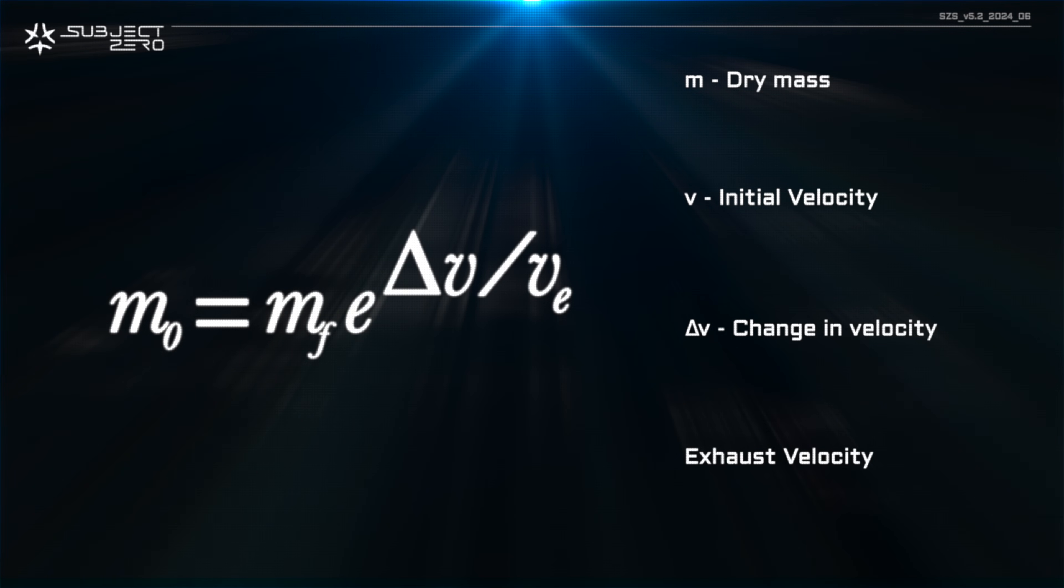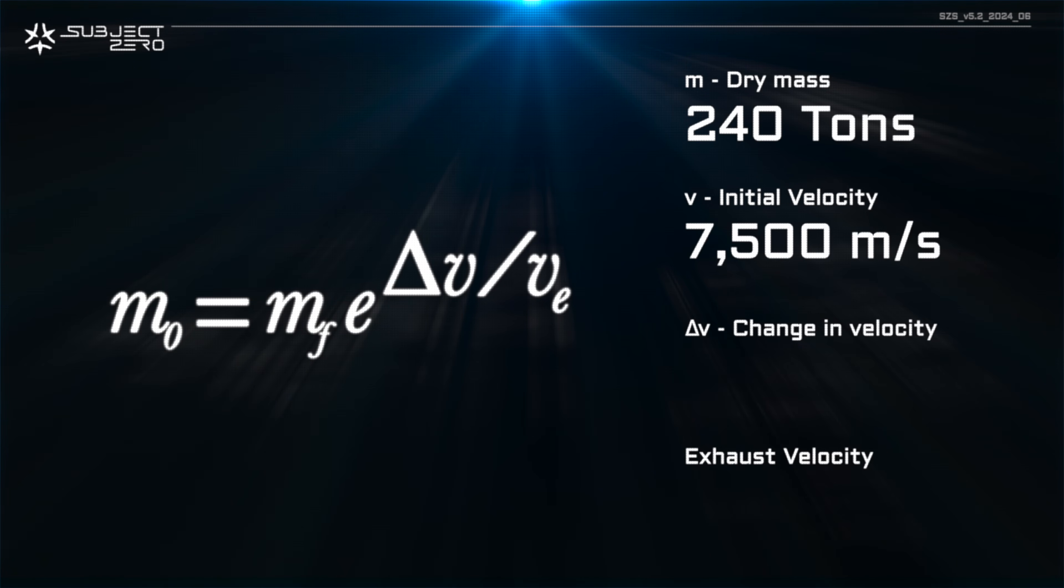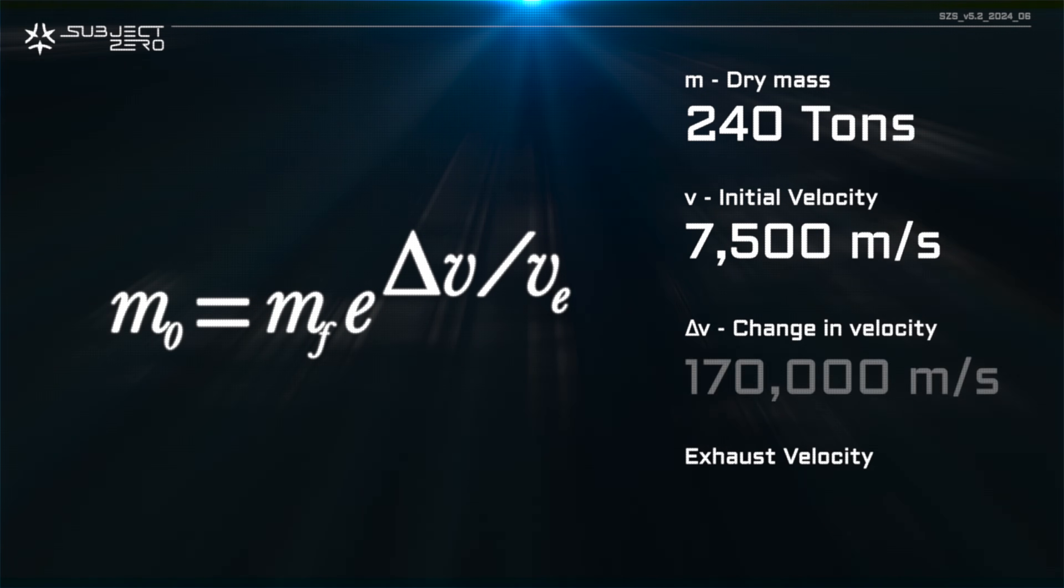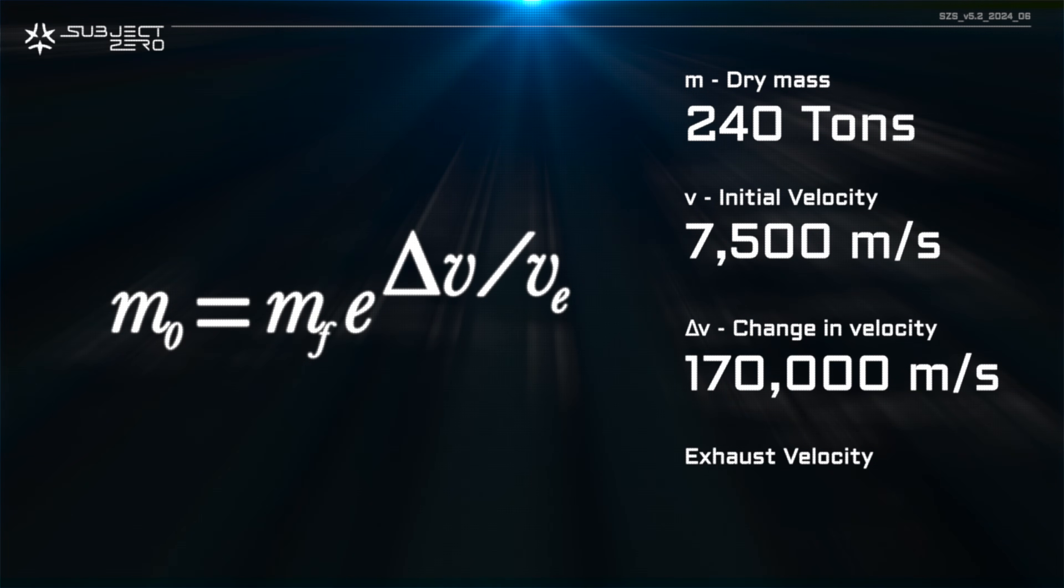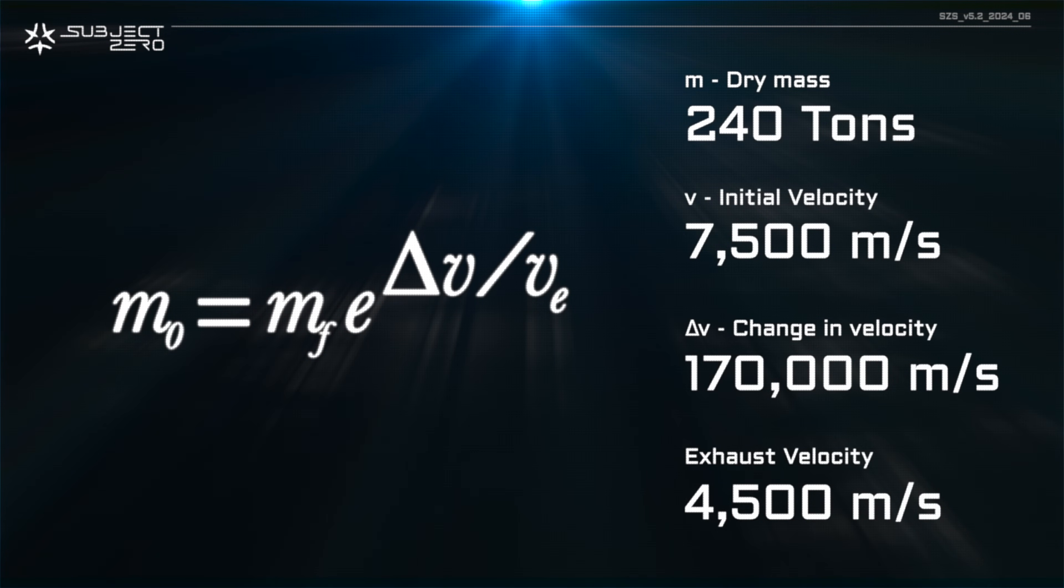Let's consider the following: ship's dry mass of 240 tons, initial velocity 7,500 meters per second, desired change in velocity 170,000 meters per second, effective exhaust velocity 4,500 meters per second.